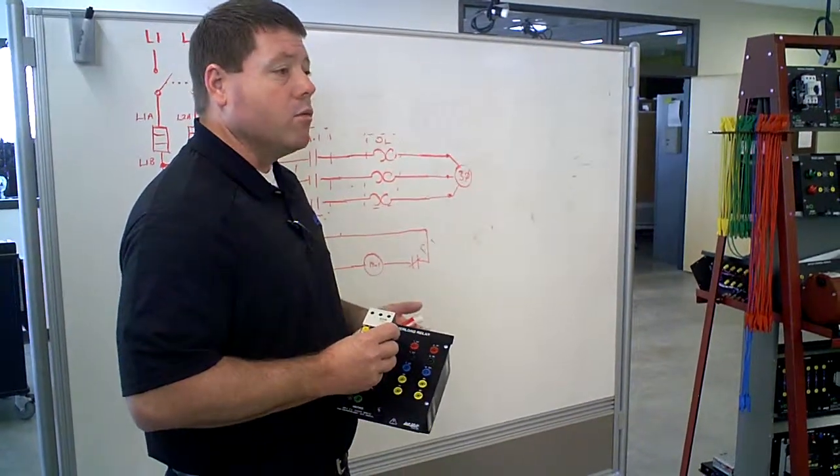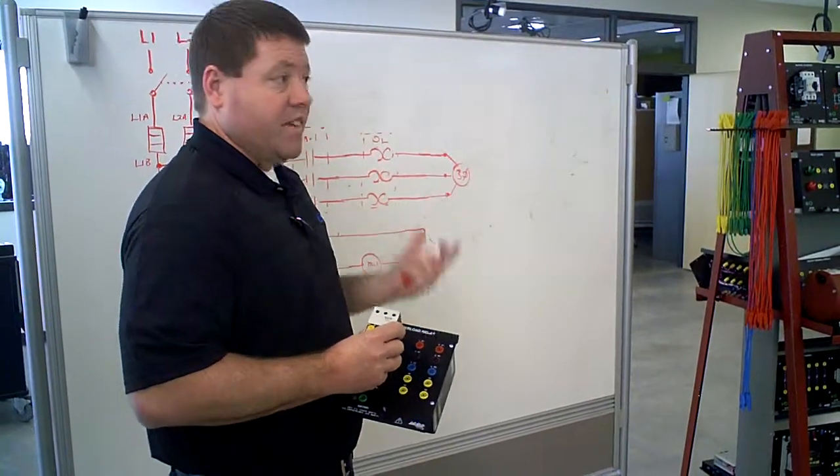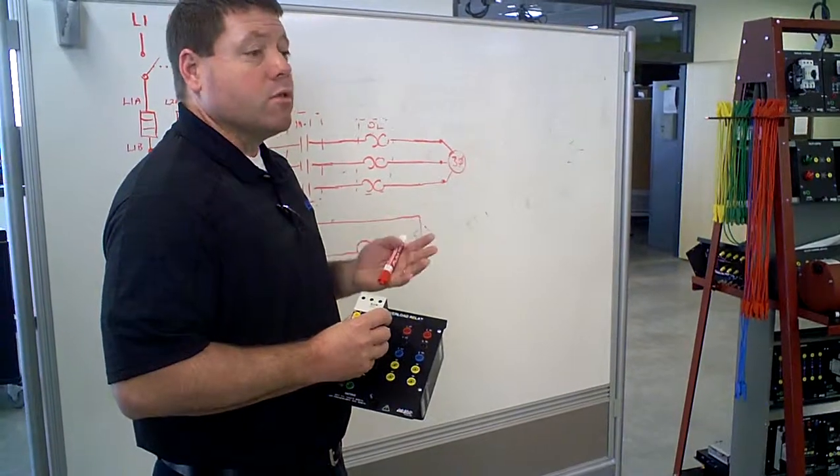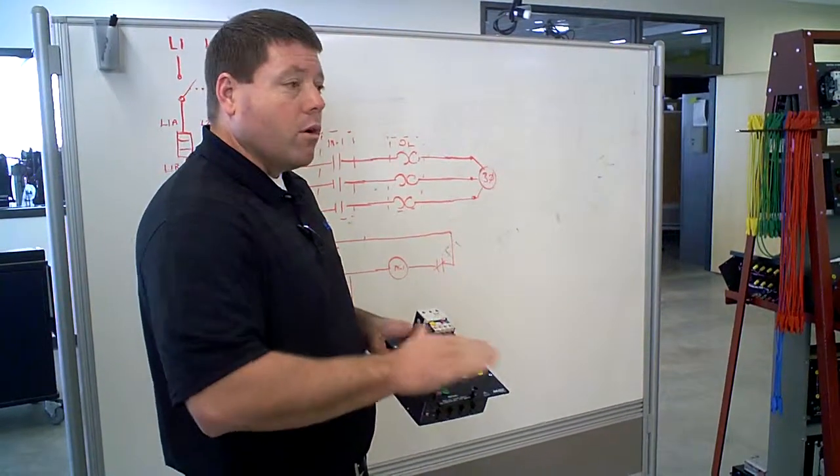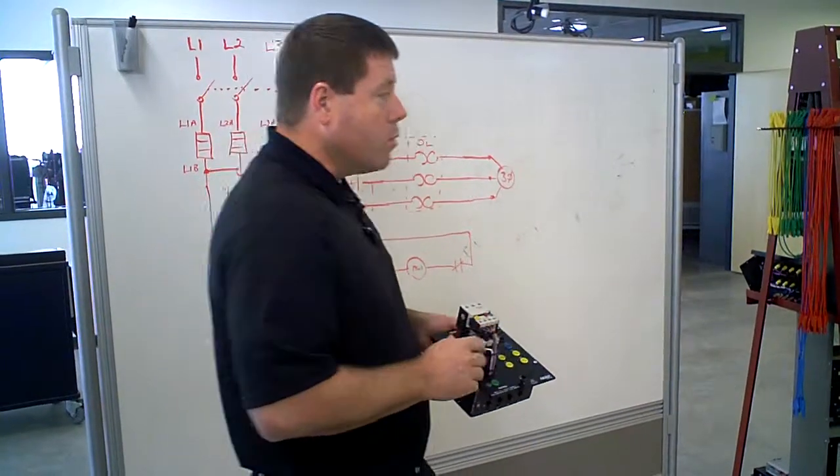So the fuses can be sized well above, 150% more than what the rating of the wire is. So you may have a 50 amp fuse on a 20 amp wire, and it's fine because it's only protecting you from ground faults and short circuits.